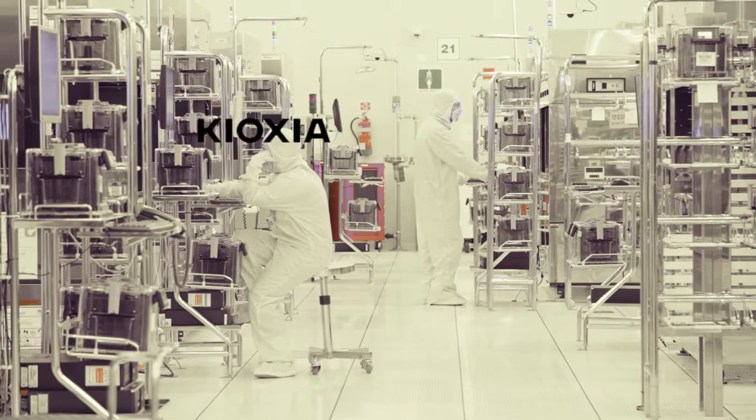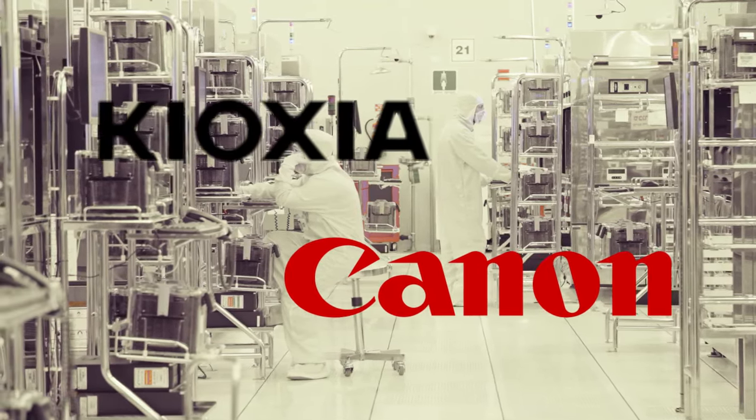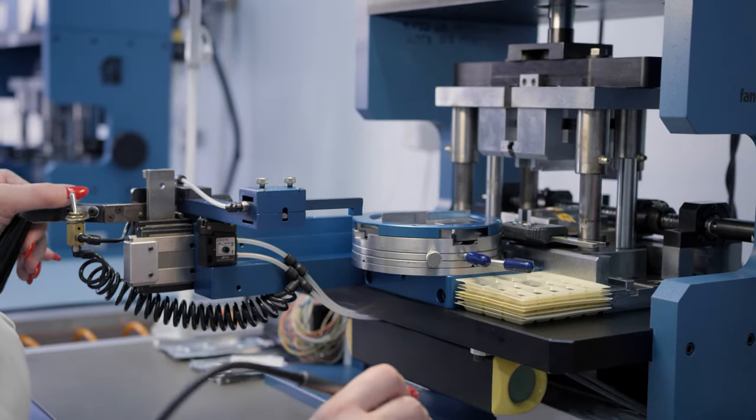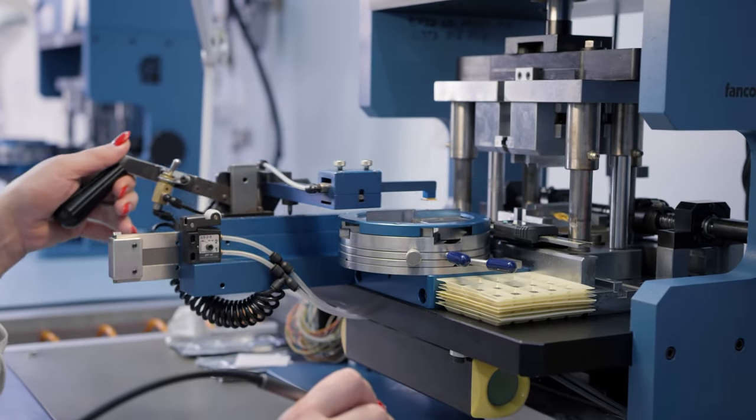Manufacturers such as Kioxia and Canon are taking steps to disrupt ASML's monopoly by introducing the NIL process. This breakthrough has the potential to revolutionize the production of 5-nanometer chips without relying on ASML's UV lithography machine.